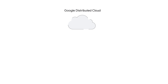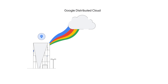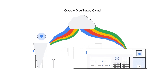or GDC. This portfolio of solutions extends Google Cloud infrastructure, software, and services to the edge and into data center environments, ensuring these workloads can still take advantage of the flexibility, security, built-in intelligence, and consistency at scale of Google Cloud.